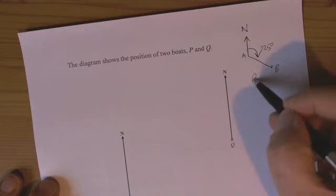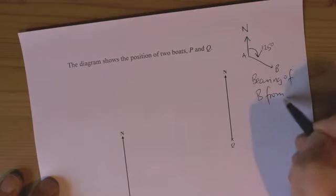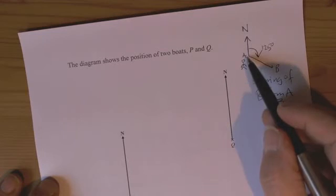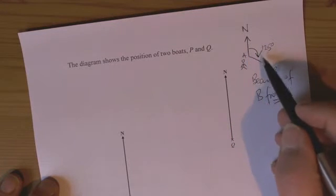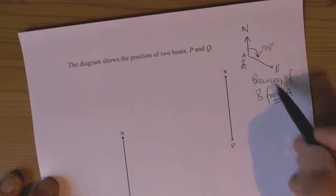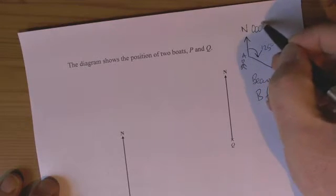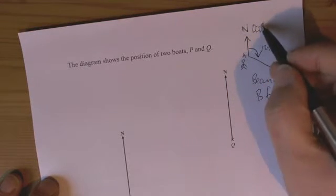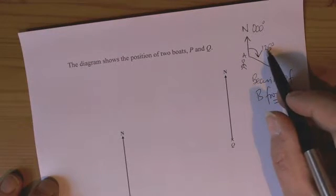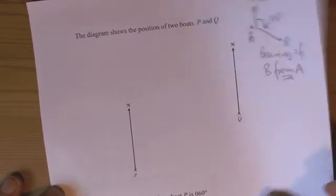So we say the bearing of B from, and that's a really important bit, from A. So in other words, I'm stood at A and I'm looking now at B. Basically, I turned 125 degrees after facing north first to be on a bearing of 125. North has always got a bearing of three digits, 0, 0, 0, to remind us that in our bearing answers, we should always be working with three digits, three whole number digits, so 125 degrees.